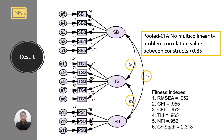From the pilot CFA results, there is no multicollinearity problem between the constructs, where the correlation value between constructs is less than 0.85, which means that no multicollinearity problem occurred.